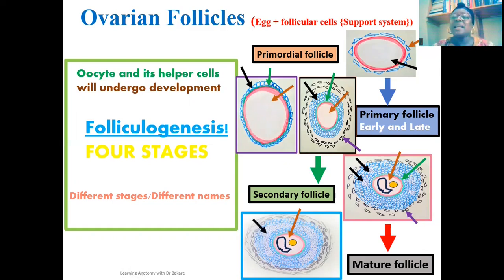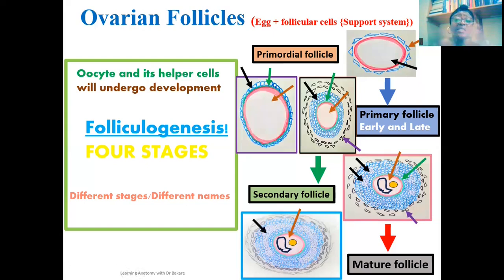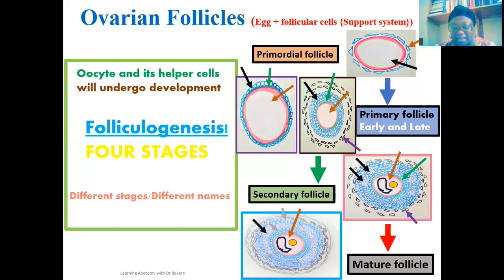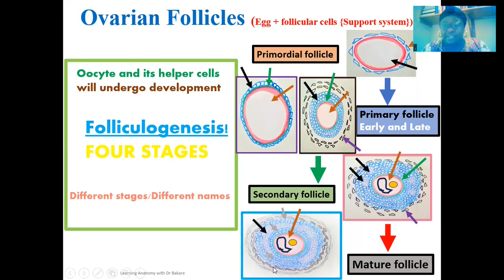The surrounding granulosa cells now form a single fluid-filled space called the antrum, arrowed in black. The small fluid-filled spaces from the secondary follicular stage coalesce to form this single antrum. Because of the antrum's formation, granulosa cells are repositioned into specific groups: those surrounding the developing egg form the corona radiata, those lining the follicle wall form the membrana granulosa, and those connecting the two form the cumulus oophorus.